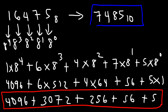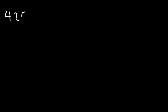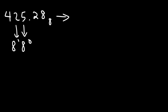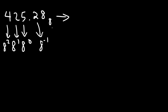So 7,485 is the final answer. Now what if we have a fractional number? Let's say 425.28 in the octal system — how can we convert that to a base 10 number? We know the 5 we multiply by 8 to the 0, the 2 by 8 to the 1, and 4 by 8 squared. Following the pattern of exponents, the next number after the decimal point must be 8 to the negative 1.